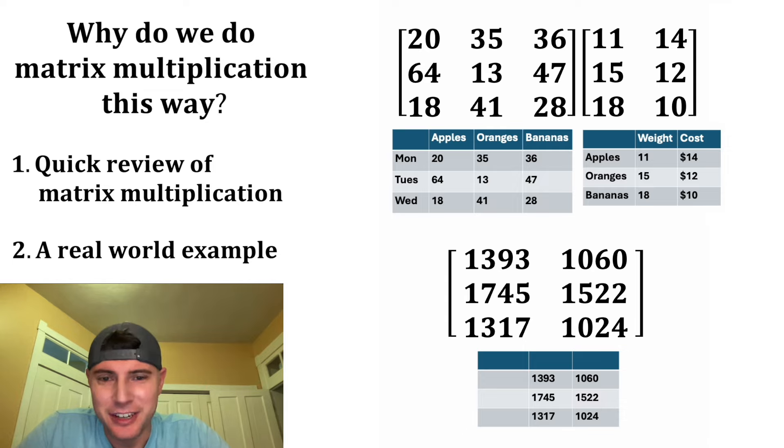So now what is the answer giving us? Well, the columns are going to be the weight and the cost, and the rows are going to be Monday, Tuesday, and Wednesday. So let's say this is the context of a store that I own. For my store, I now know that the total weight of the fruit delivered on Monday was 1,393. Or that the total cost of the fruit delivered on Tuesday was 1,522. By performing the matrix multiplication in this manner, I was able to summarize this data in this way.